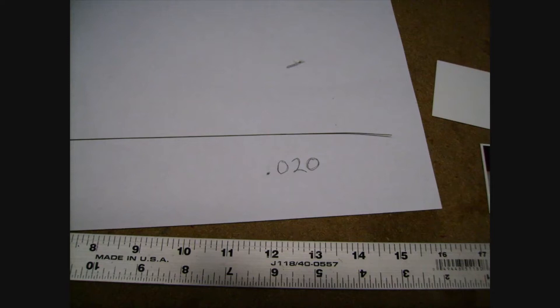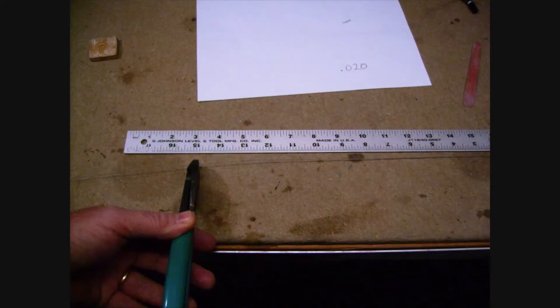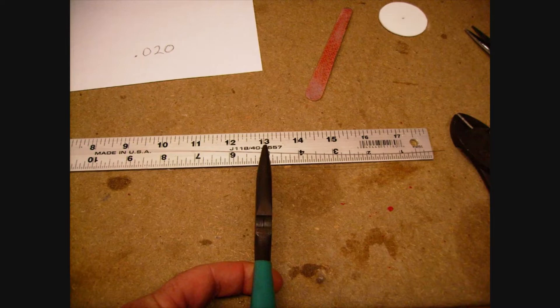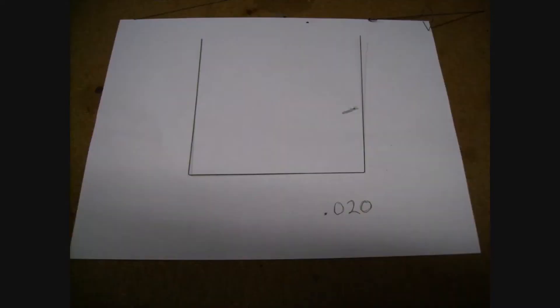I use a .020 music wire and I cut it at 15 inches long because I want my torque meter to be 5 inches long. I bend these at 90 degrees so I have three equal parts.